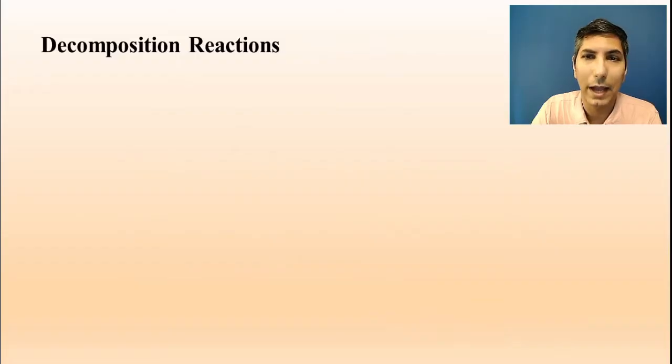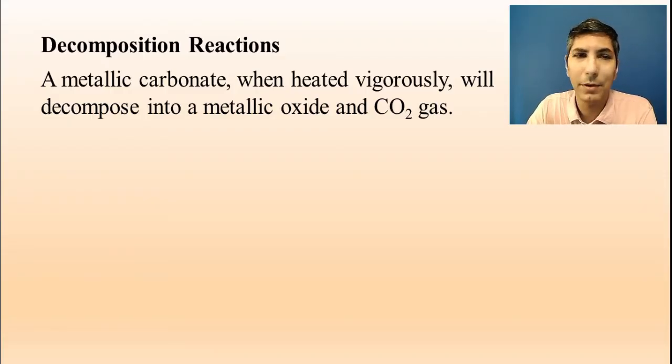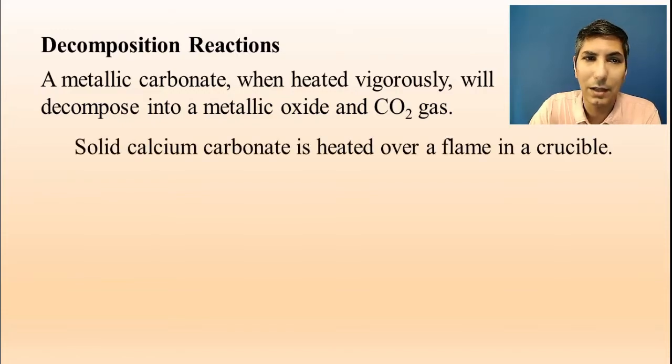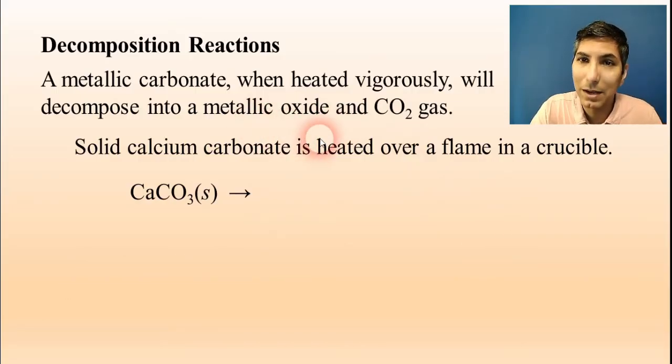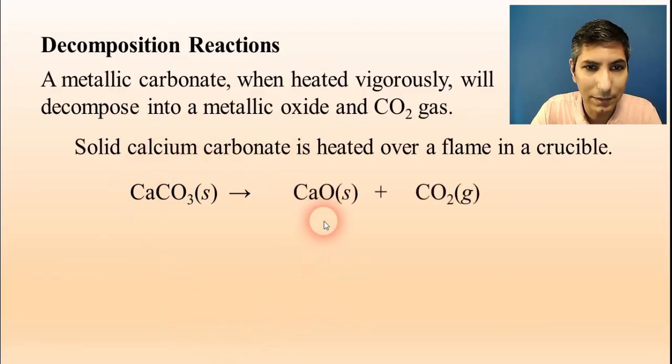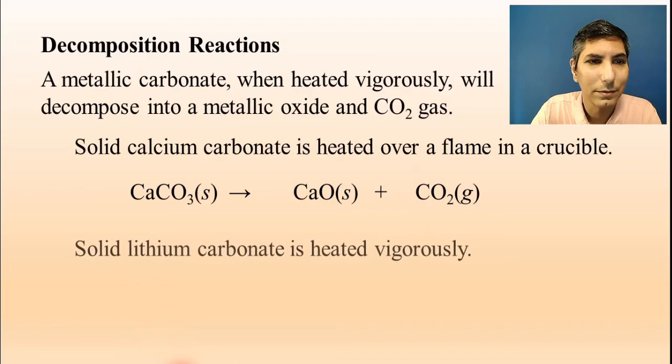So what's another type of reaction? Well, we know that there are decomposition reactions where you have one reactant. And that reactant is going to literally decompose. That's why it's called decomposition. So you have one reactant and it decomposes into two or sometimes more than two products. So there are several of these that you need to be aware of. A metallic carbonate, when heated vigorously, will often decompose into a metallic oxide and carbon dioxide gas. So a good example of that is solid calcium carbonate is heated over a flame in a crucible. So calcium carbonate is CaCO3. And when it's heated, we're going to get that carbon dioxide gas that's mentioned here. But we're going to have a metallic oxide. And the metal in the metallic oxide is the calcium. So we're going to have calcium oxide along with carbon dioxide gas. And so using that rule, you can figure out what the products are.